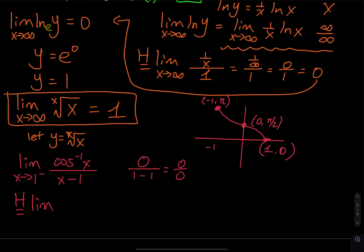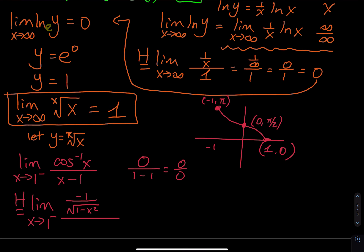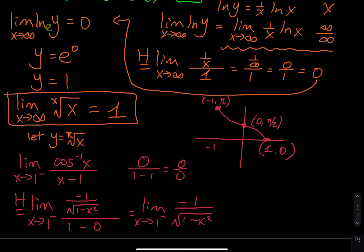Applying L'Hôpital's rule as x approaches 1 from the left: the derivative of inverse cosine is negative 1 divided by the square root of 1 minus x squared. The derivative of x minus 1 is 1. So we have the limit of negative 1 over the square root of 1 minus x squared. We can plug in, but we need to think carefully about the behavior as x approaches 1 from the left.